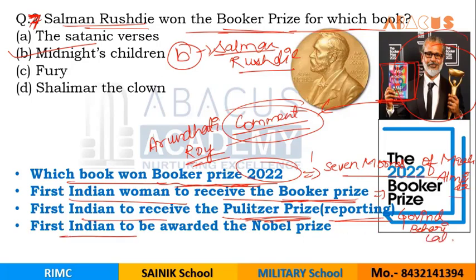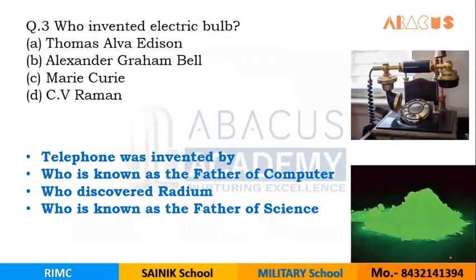Which Indian was awarded the Nobel Prize first? The first Indian to be awarded the Nobel Prize is Rabindranath Tagore.